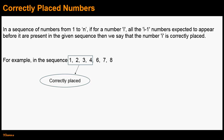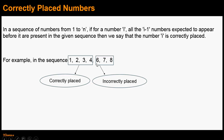On the other hand, numbers 6, 7, 8 are incorrectly placed. Note that for number 6, there are 5 numbers expected to appear before it, but there are only 4 numbers in the actual sequence. Therefore, number 6 is incorrectly placed. Same is the case for number 7 and number 8.